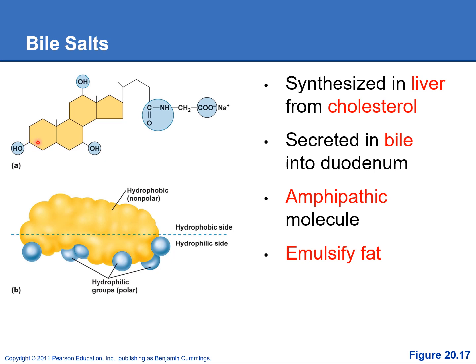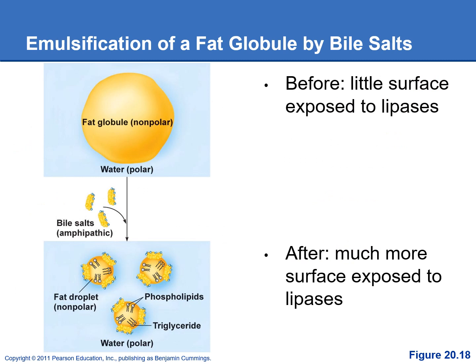Bile salts are made in the liver from cholesterol and secreted in the bile into the duodenum. They are amphipathic molecules — meaning they have both a hydrophilic side and a hydrophobic side — which allows them to get in and separate large fat globules into smaller droplets. By emulsifying the fat globules into smaller droplets, we increase the surface area, giving the pancreatic lipases much more area to work on and break down the triglycerides.